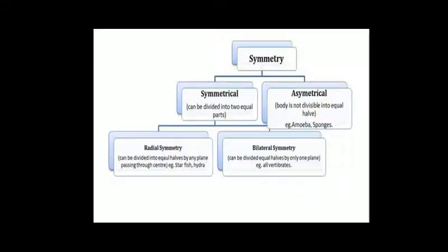Symmetry is divided into symmetrical and asymmetrical in nature. In symmetrical form, the body is divided into two equal parts, whereas in asymmetrical form the body cannot be divided into two equal halves. These symmetries are of two types: one is radial and another one is bilateral symmetry.